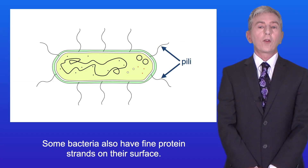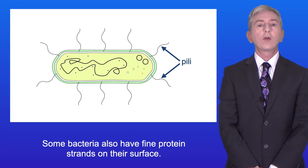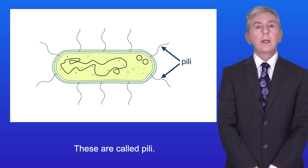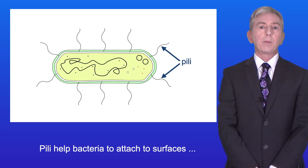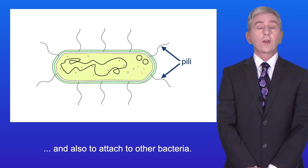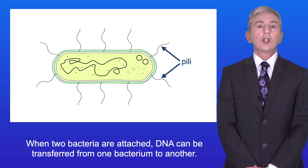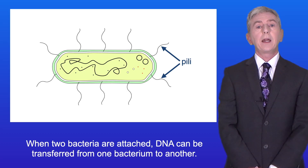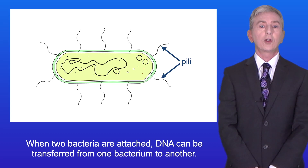Some bacteria also have fine protein strands on their surface called pili. Pili help bacteria to attach to surfaces and also to attach to other bacteria. And when two bacteria are attached, DNA can be transferred from one bacterium to another.